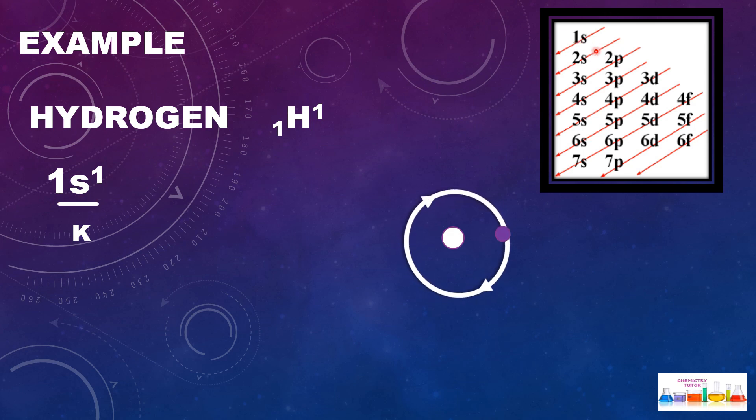We know hydrogen has atomic number 1, so it means 1s¹. If you see the Aufbau principle or Aufbau rules, we will take 1s because hydrogen has one electron, so in 1s only one electron will come. You can see only one electron is there.